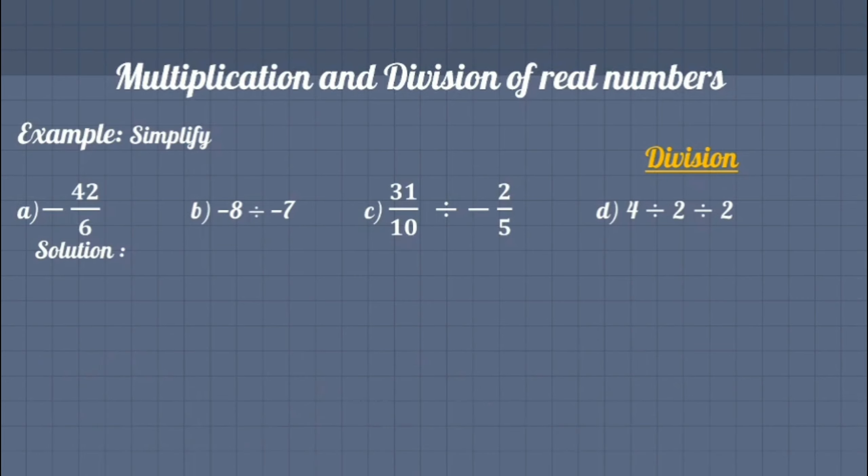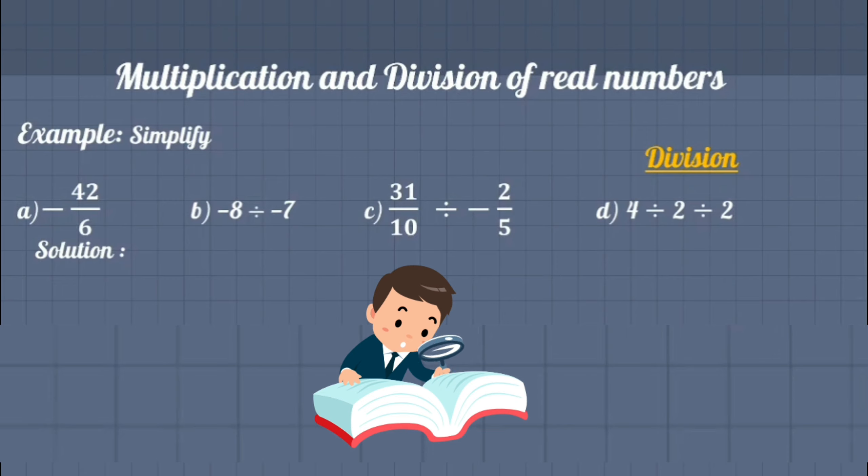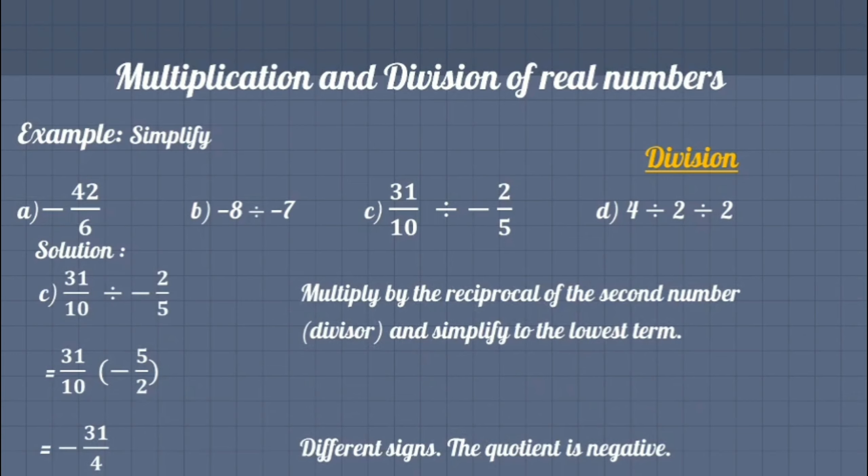But when the divisor is in the fraction or further divided by another divisor, in this case we multiply the dividend by the reciprocal of divisor and then simplify it to the lowest possible term.